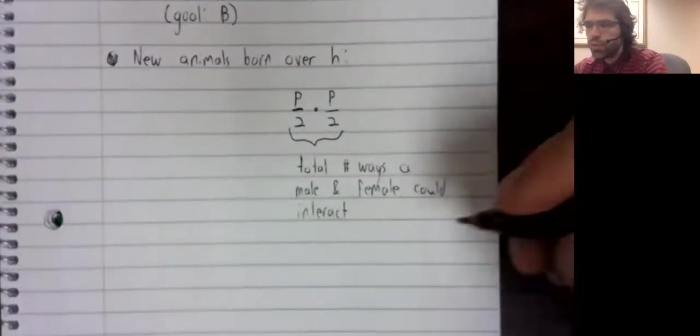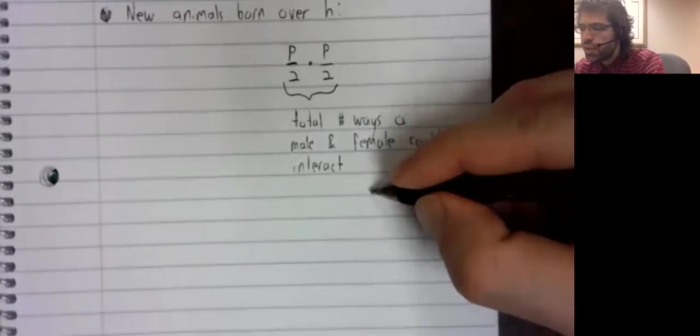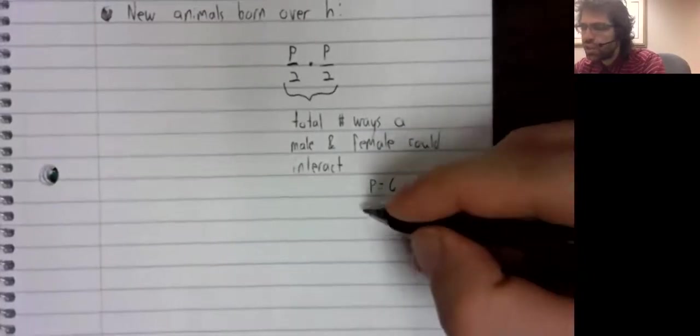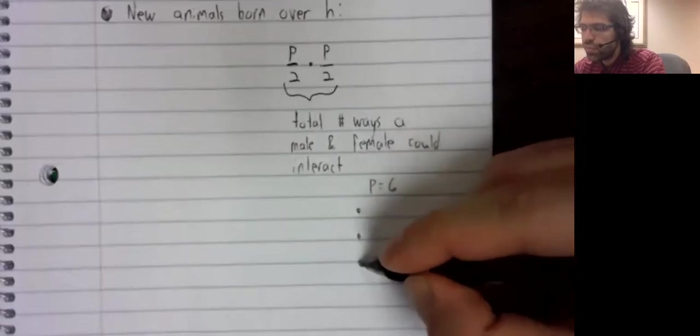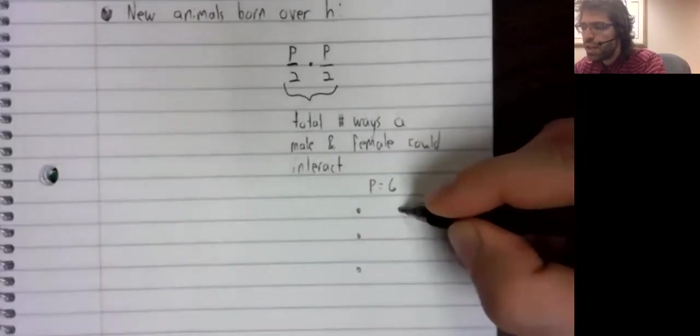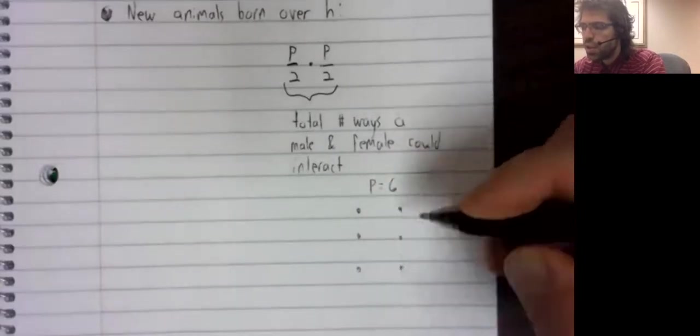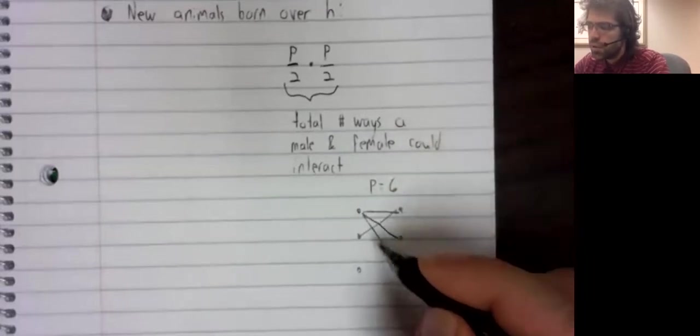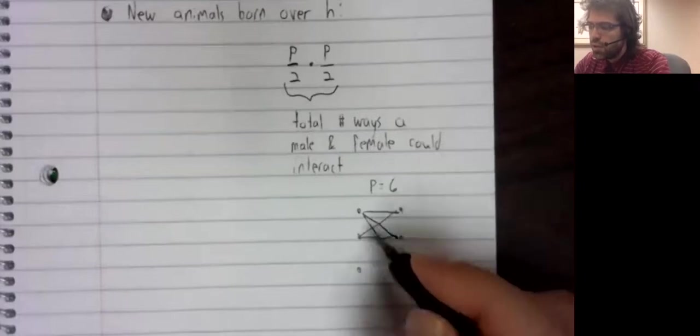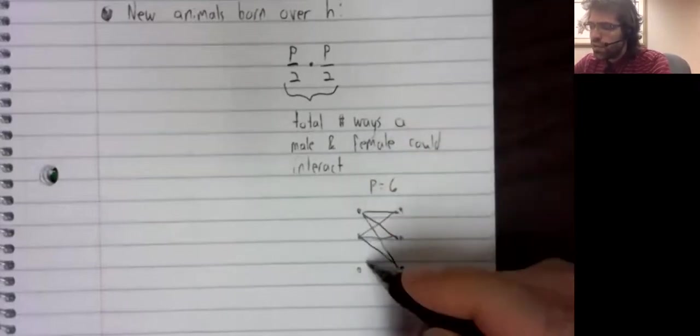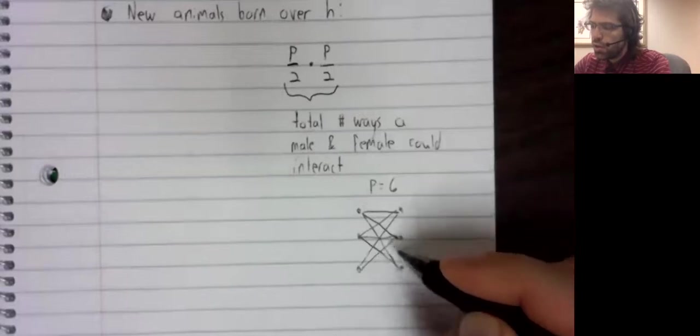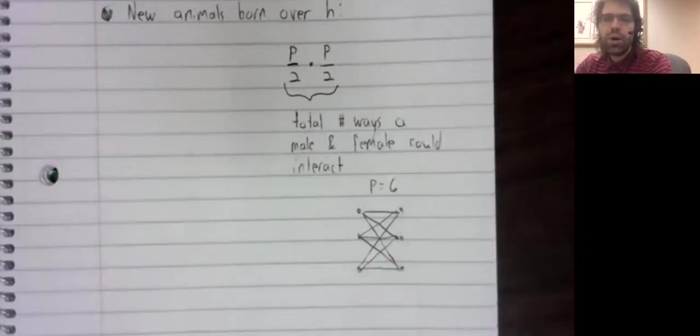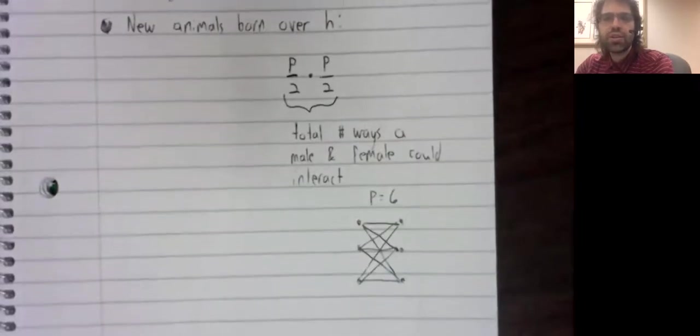I mean, for example, if we had a little population of six, three males and three females, there are these nine possible interactions.